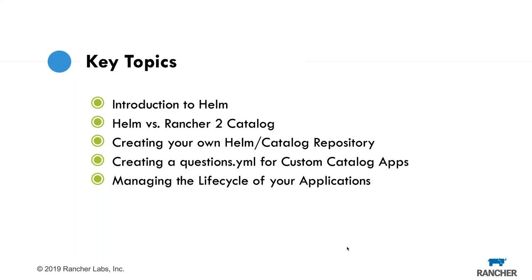We'll talk about Helm versus the Rancher 2 catalog. One of the features Rancher has is a graphical user interface around Helm, to help manage the lifecycle of your application more easily than doing manual helm install, helm upgrade commands. There's also a Helm provider for things like Terraform, or you can script it yourself. We'll go over creating your own Helm catalog repository by deploying Chart Museum, creating a questions.yaml for custom catalog apps, and managing the lifecycle of your applications using Helm.